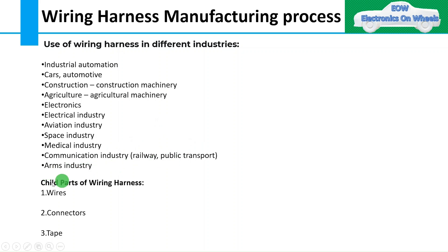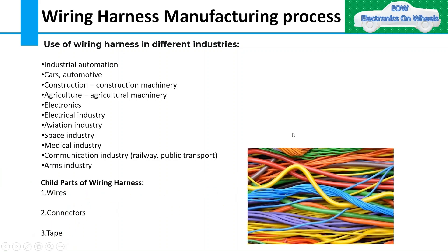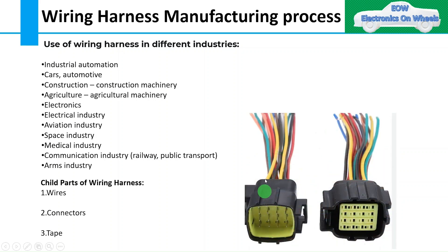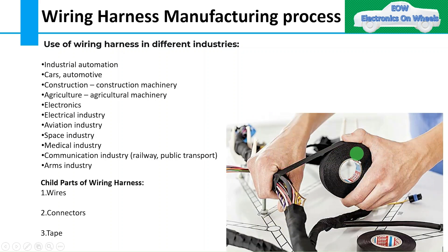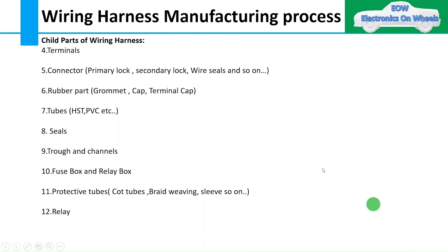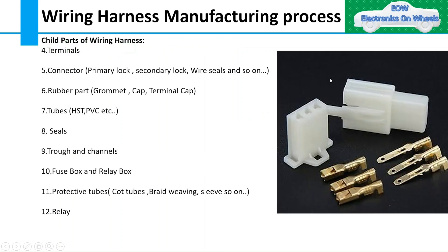Moving to the child parts of wiring harness. Before getting into the manufacturing process, we need to understand what all parts make up a wiring harness, because the final wiring harness is built by assembling all the child parts. The first child part is wires, which are used to transfer energy from one end to the other. The second is connectors, which are the main component to connect one wiring harness to another and to devices. Next is taping, which is used to provide protection and fix the harness. The fourth is terminals, which are used to connect one end to another and to make the connection.